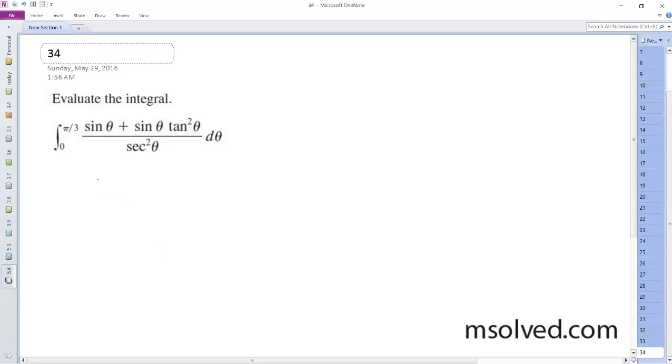So we can factor out sine of theta and then get one plus tangent squared theta, all over secant squared theta.